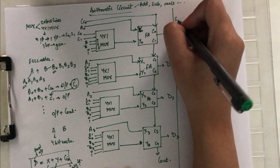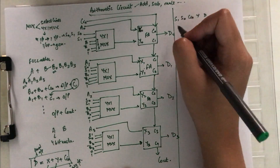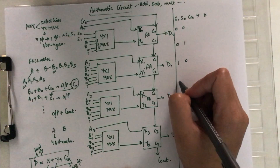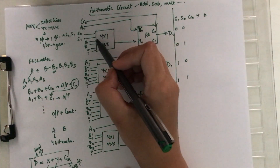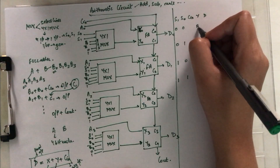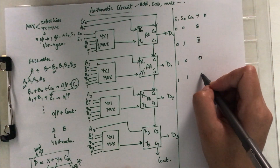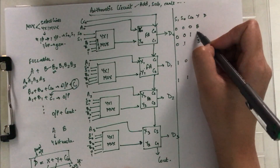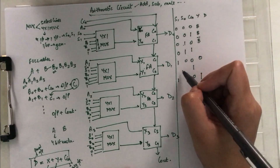Now making the truth table for this arithmetic circuit, we have columns S1, S0, C-in, Y, and the value of D. S1 and S0 can be 00, 01, 10, and 11. Looking at the diagram: for position 0 we have Y = B, for S1S0 = 01 Y is B-complement, for 10 Y is zero, and for 11 Y is one. For every select line combination, C-in can be either 0 or 1, so C-in alternates: 0, 1, 0, 1, 0, 1, 0, 1.